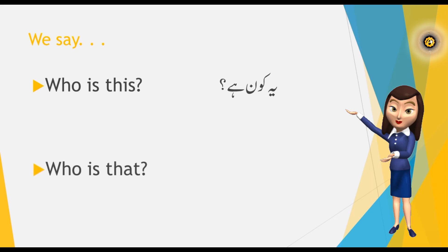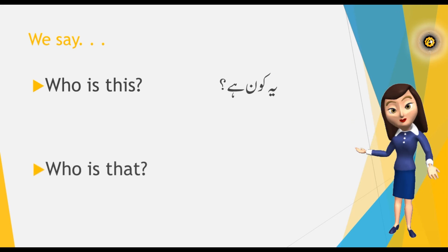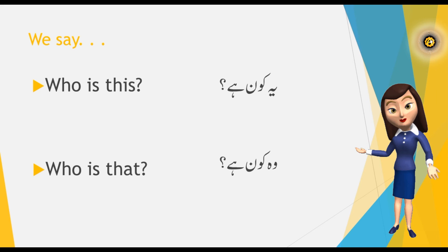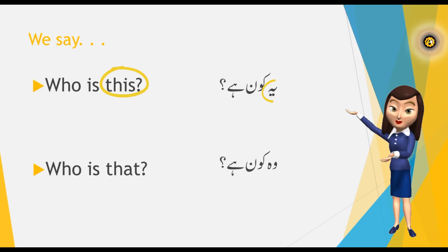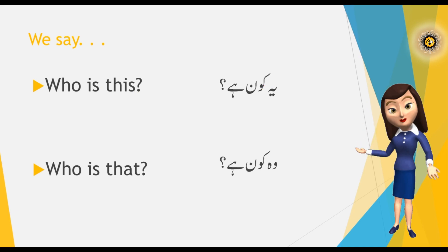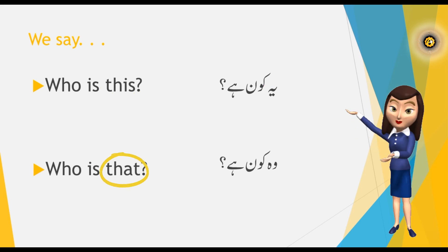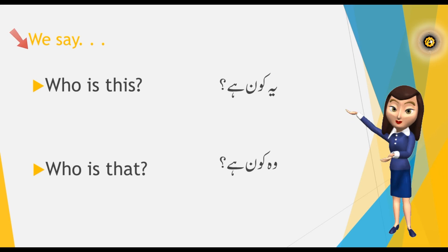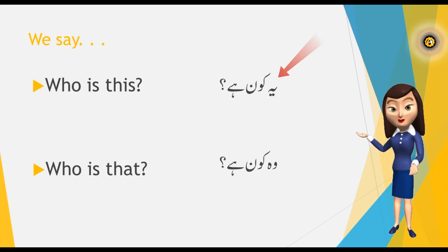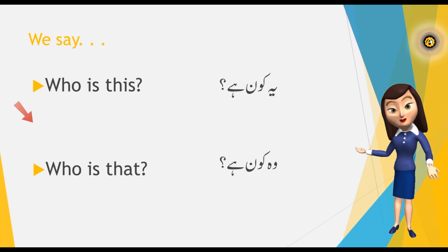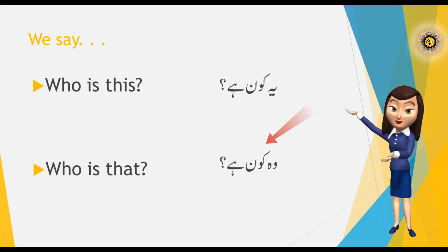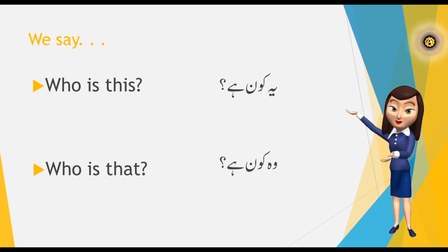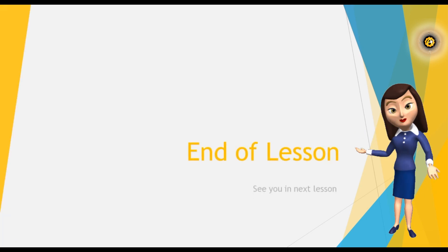And 'Who is that?' in Urdu is 'Woh Koon Hai.' If the word 'this' is in the question, you say 'Yeh.' If the word 'that' is in the question, you say 'Woh.' Let's repeat: 'Who is this?' — 'Yeh Koon Hai.' 'Who is that?' — 'Woh Koon Hai.' Repeat many times for better practice.